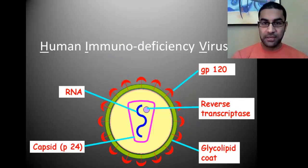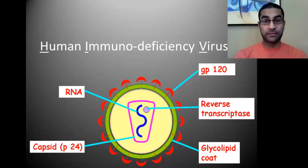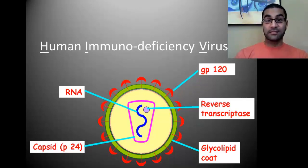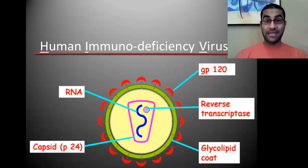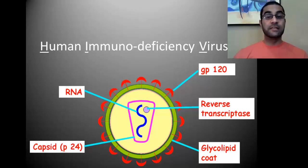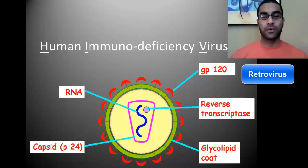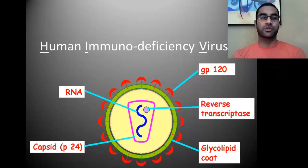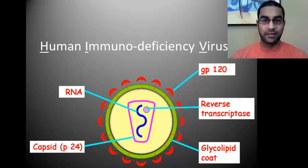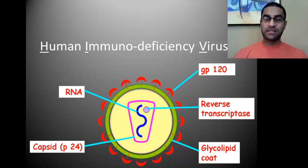HIV stands for human immunodeficiency virus — the virus that attacks the immune cells of a human. HIV is what we consider a retrovirus. Retro means back or reverse, so a retrovirus does things in reverse. The thing it does in reverse has to do with its genetic information. Most cells and most viruses have genetic information in the form of DNA. But retroviruses actually don't start with DNA — they start with RNA.